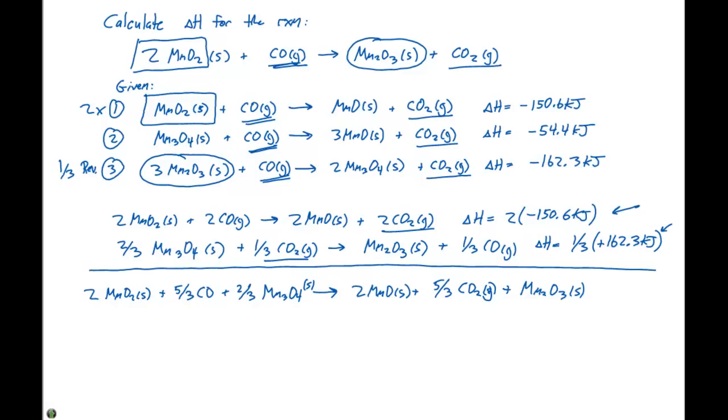So we need to use actually reaction number two. We're going to need to reverse it. So we'll reverse reaction two and we'll multiply that by two-thirds. And when we do that, hopefully we can cancel out all our unwanted products and reactants.